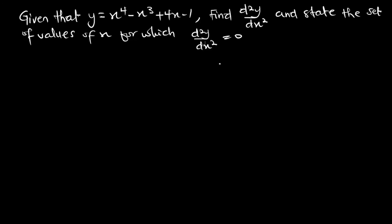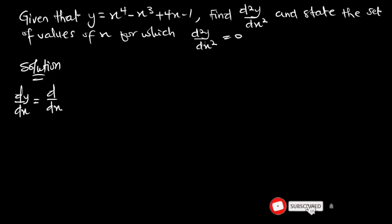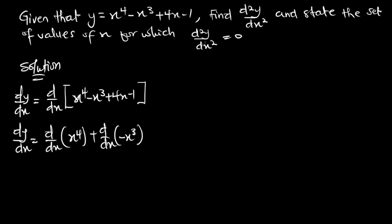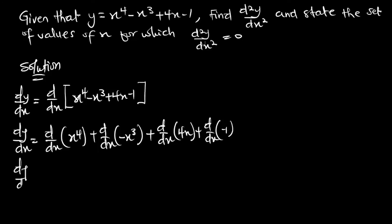Now let's go ahead and find a solution for the next problem — finding the second derivative and the set of values of x for which the second derivative is equal to zero. To find the second derivative we first need to find the first derivative. So we have dy/dx equal to d/dx of the function x⁴ − x³ + 4x − 1.